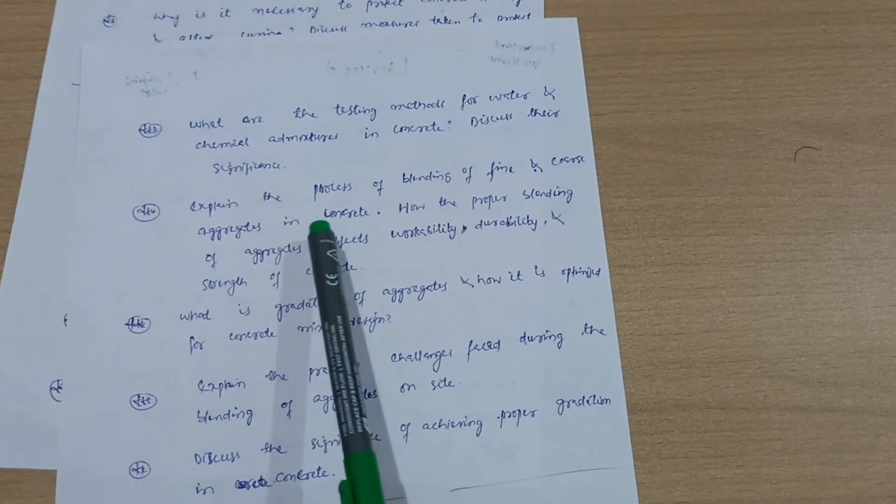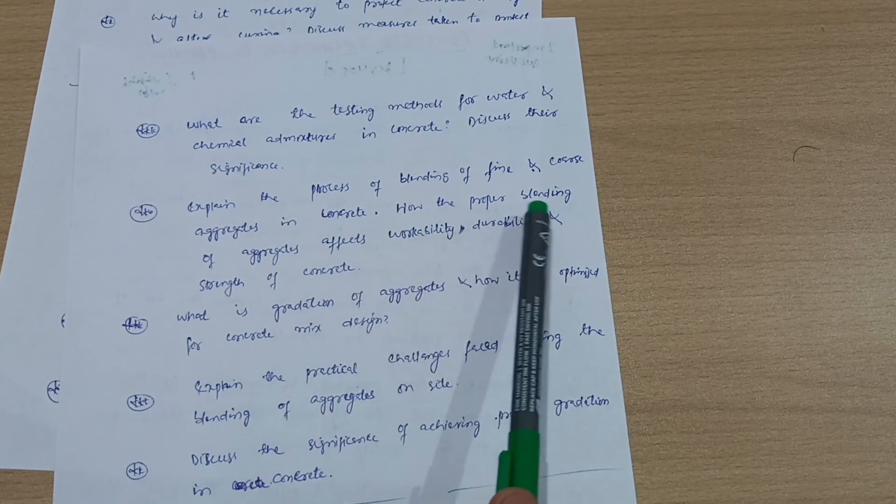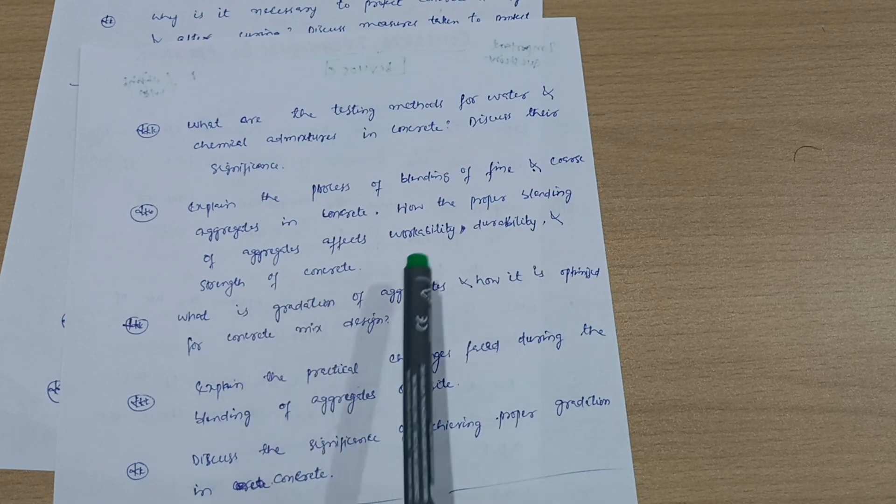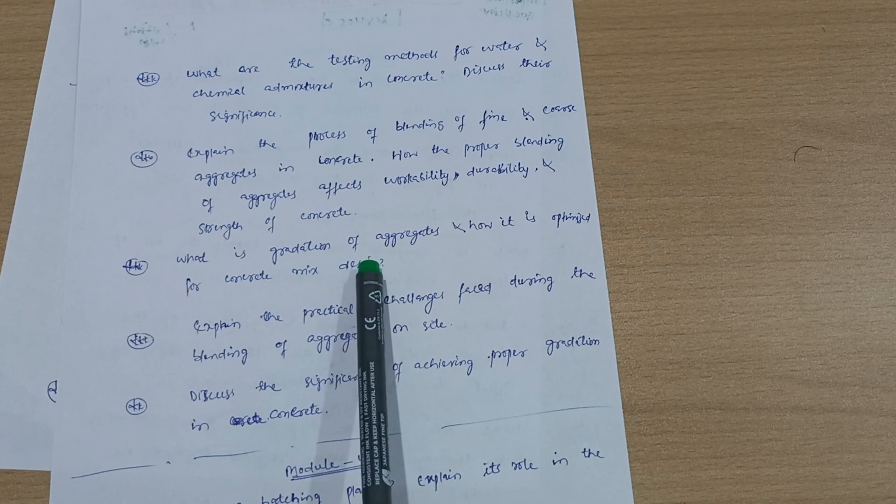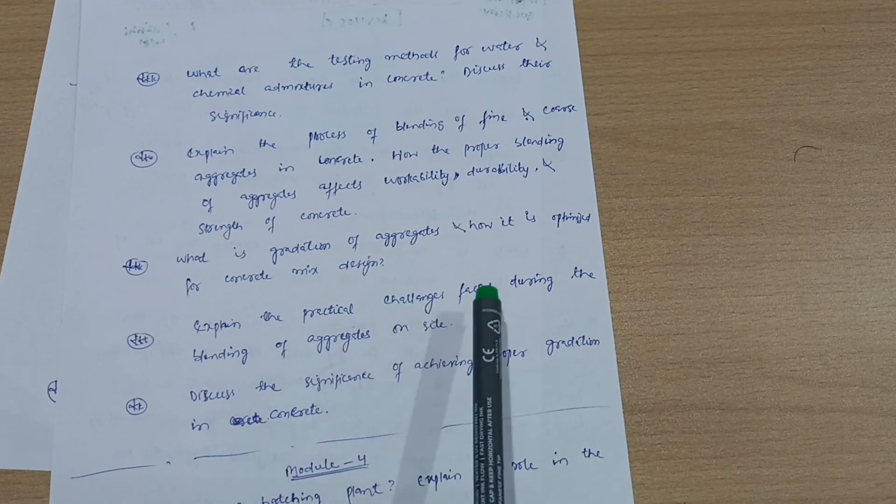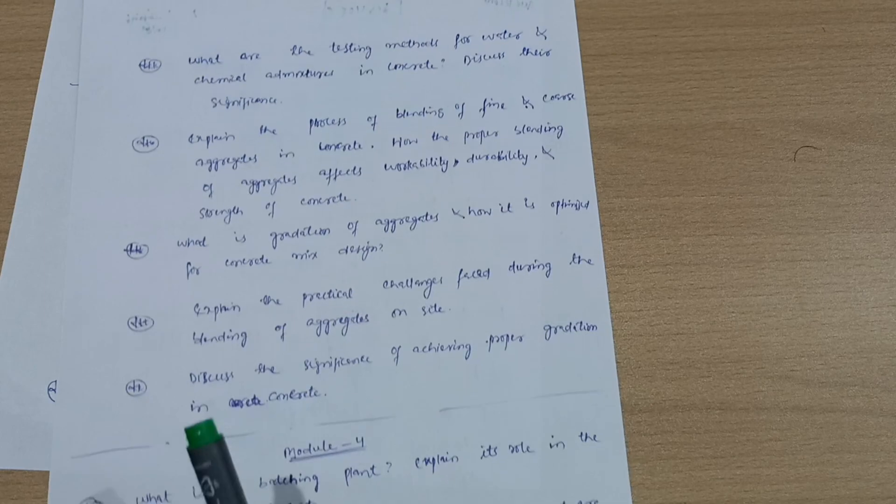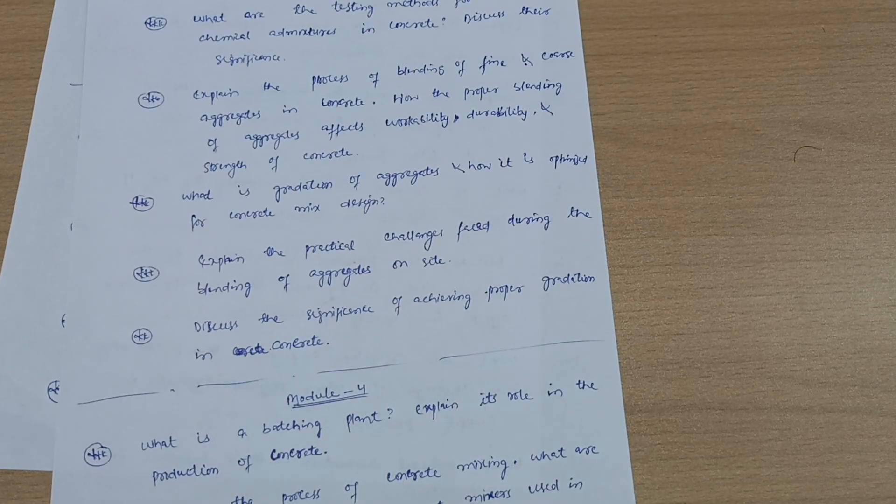Explain the process of blending of fine and coarse aggregates in concrete. How does proper blending of aggregates affect workability, durability, and strength of concrete? What is gradation of aggregates and how is it optimized for concrete mix design? Explain the practical challenges faced during the blending of aggregates on site. Discuss the significance of achieving proper gradation in concrete. These are all about Model 2.